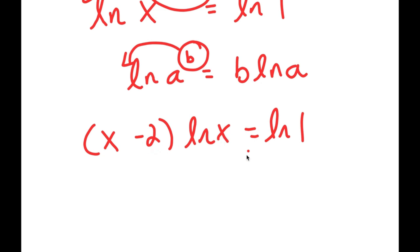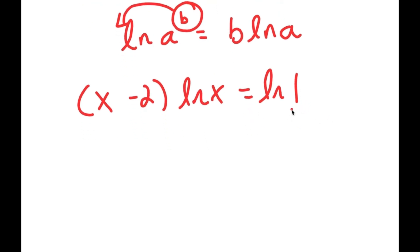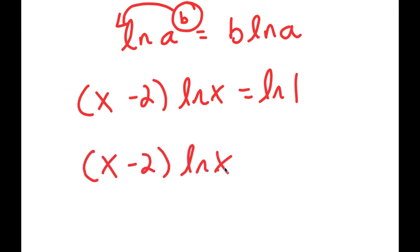So I get x minus 2 times ln x is equal to ln 1. And ln of 1 is the same thing as 0. So I have x minus 2 times ln x is equal to 0.